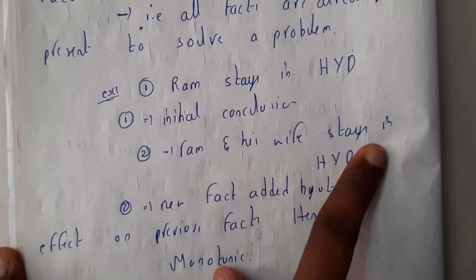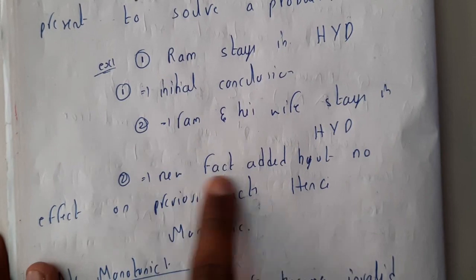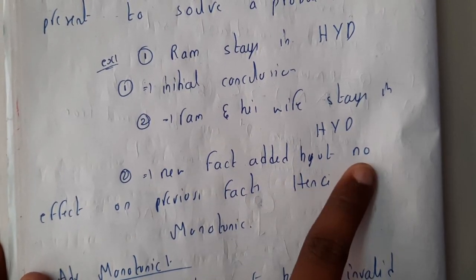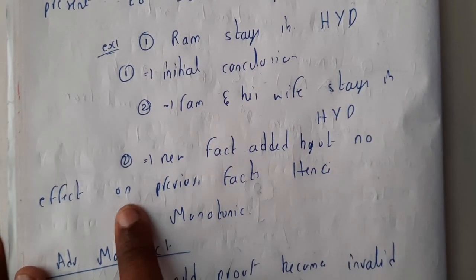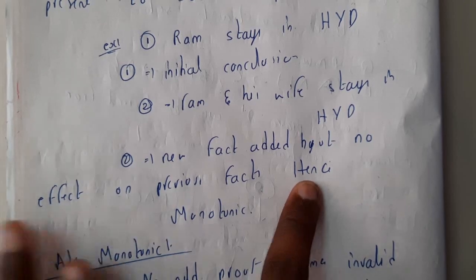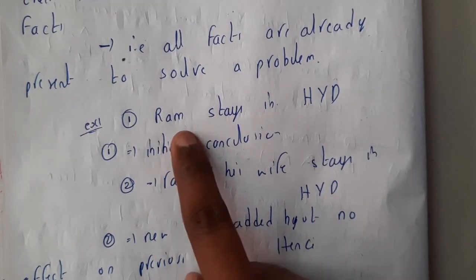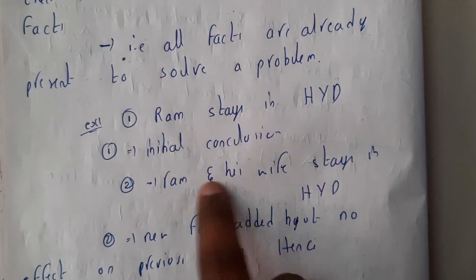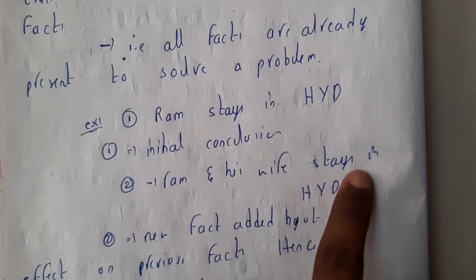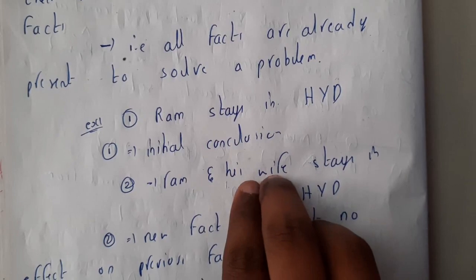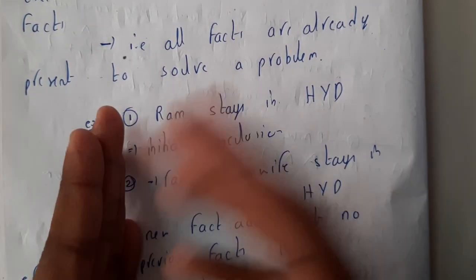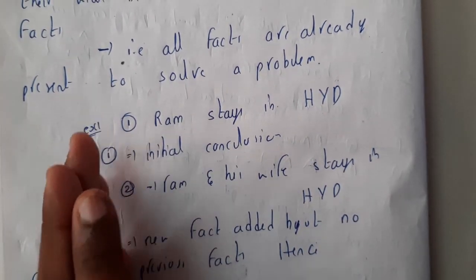And the previous fact. So by updating this fact did you affect anything? So basically this new fact consists of the previous fact. Ram stays in Hyderabad, now ram and his wife are staying in Hyderabad. Is there any change? The previous statement included one more statement, that's it. There is no change to the previous, so this is nothing but monotonic.